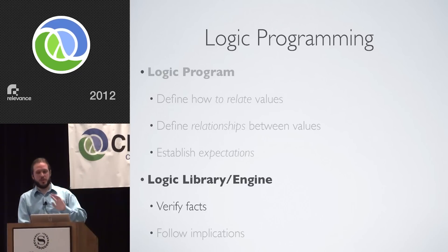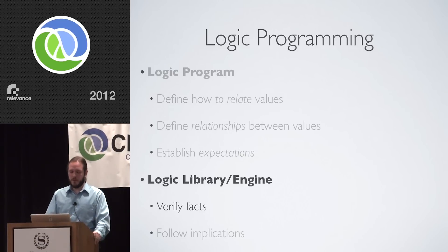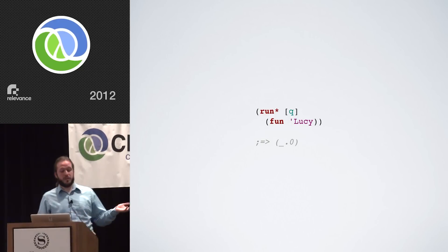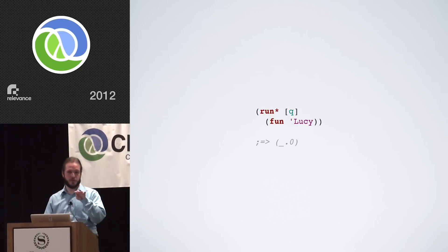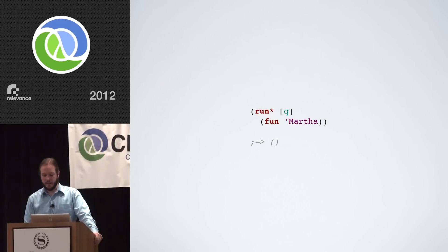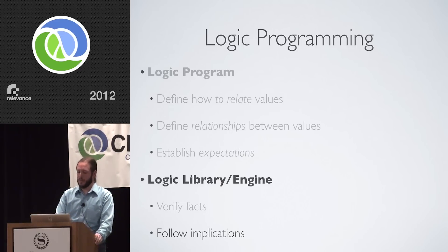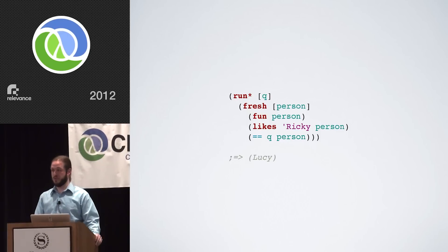So we had to set up relationships, define the language for them, instantiate them, and run a query over them. What does the logic engine give us for free? First, it should be able to verify facts encoded in our little mini database of people. We can ask 'Is Lucy fun?' — yes, she is. Martha? No fun. So: verification of facts. Secondly, and possibly more interesting, is that it should be able to follow implications — sometimes called making inferences. It should be able to follow the implications of the relationships we established in our application.